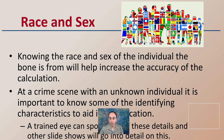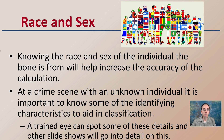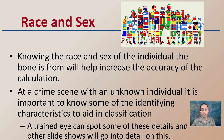Now looking at race and sex, or the gender of the individual — knowing the race and sex of the individual will help increase the accuracy of the calculation, because there are different formulas to apply. At a crime scene with an unknown individual, it's important to identify some characteristics to aid in classification. The trained eye can spot some of these details, and other slideshows will go into detail on how to classify an unknown individual to allow a more accurate formula to be applied.